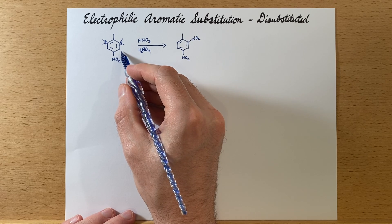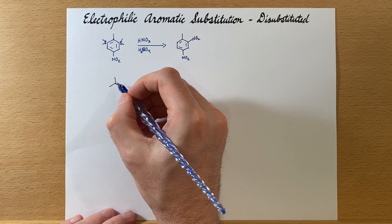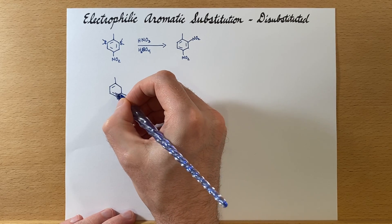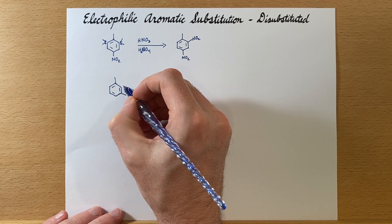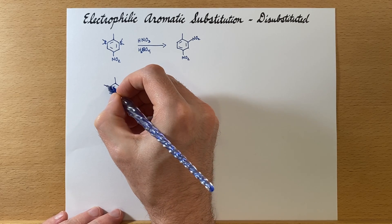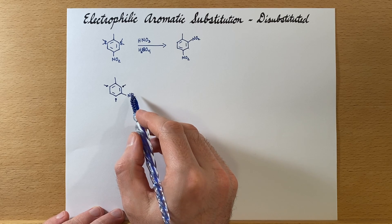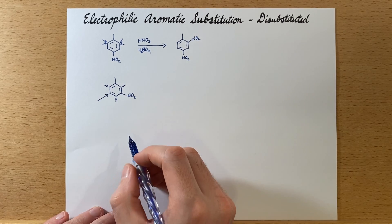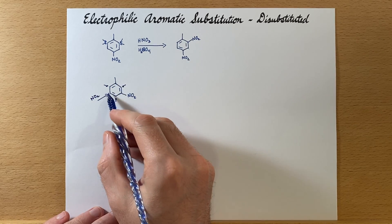If we just move the nitro group over one into the meta position, we can see this effect. We'll put the nitro group here. Now let's look at the positions where the alkyl group is directing — it's directing here, here, and here. So I'll put little arrows there. Ortho and para. Now the nitro group is directing meta. One of the meta positions is already taken up, so the nitro group is directing right here. I'll draw a bigger arrow for that one just to differentiate it — the NO2 is directing in that position.